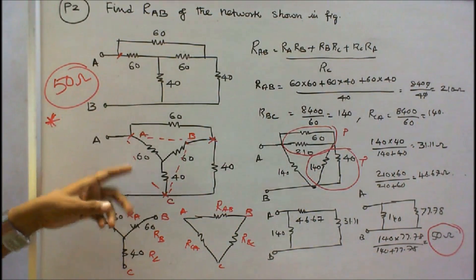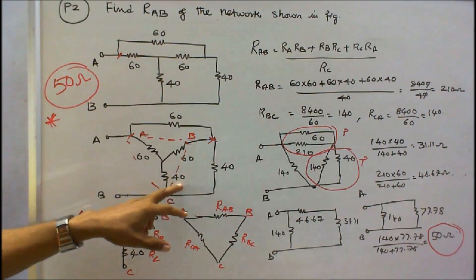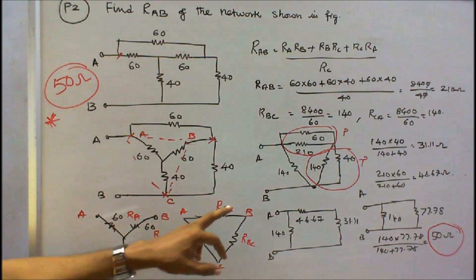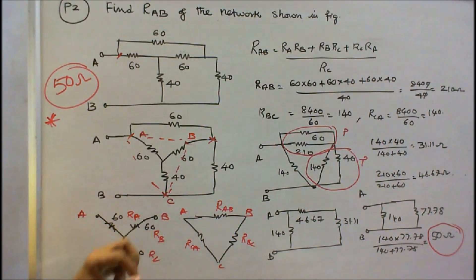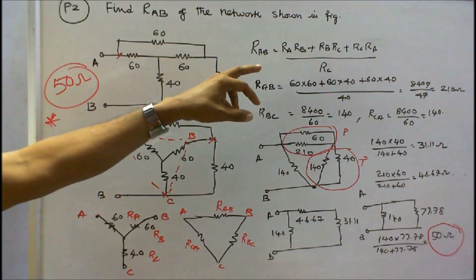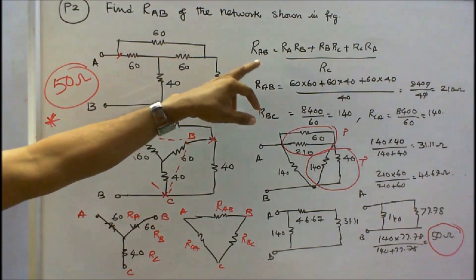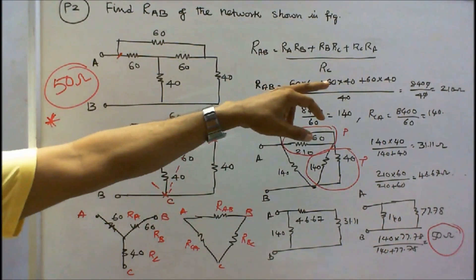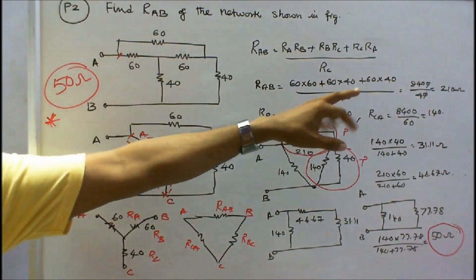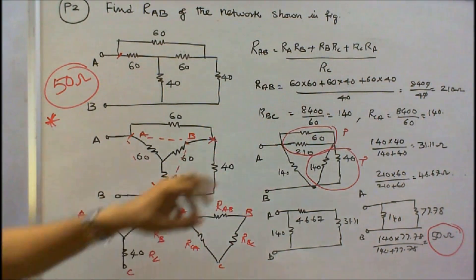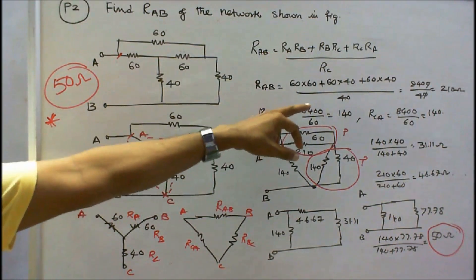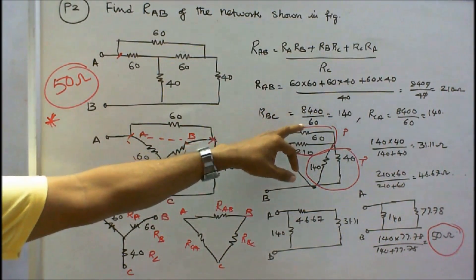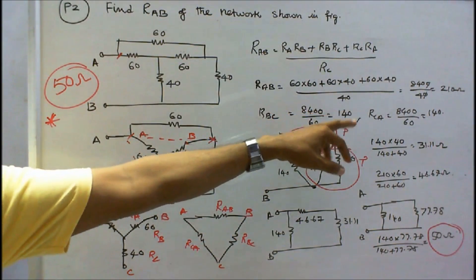I redraw the diagram with nodes A, B, C — values 60, 60, 40. To convert star to delta: RAB = (RA×RB + RB×RC + RC×RA) / RC. C is missing, RC = 40. RAB = 8400 / 40 = 210 ohms. Similarly, RBC = 8400 / RA = 8400 / 60 = 140 ohms. RCA = 8400 / 60 = 140 ohms.